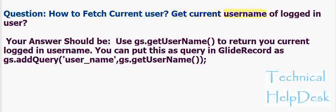Question: How to fetch the current username of the logged-in user? Use gs.getUserName() to return the current logged-in username. You can use this as a query in GlideRecord as: gs.addQuery('user_name', gs.getUserName()).